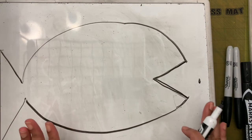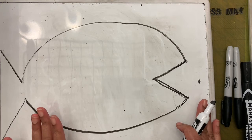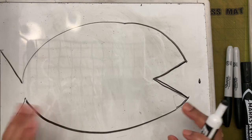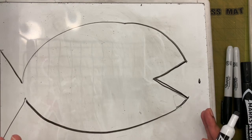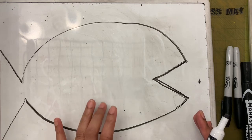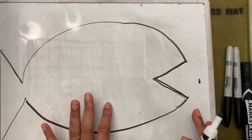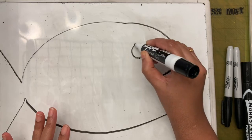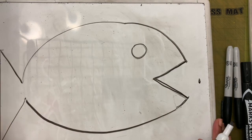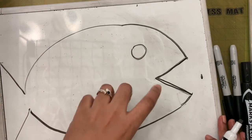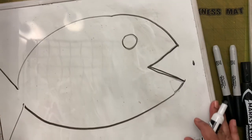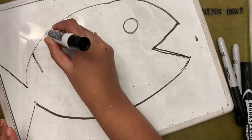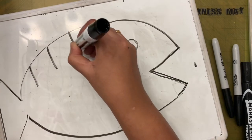Is this fish an organic shape or a geometric shape? It's not a regular shape that everyone can identify - it is irregular, so it is called an organic shape. Now I'm going to make an eye up here, and then draw lines inward to create the fish mobile pattern.